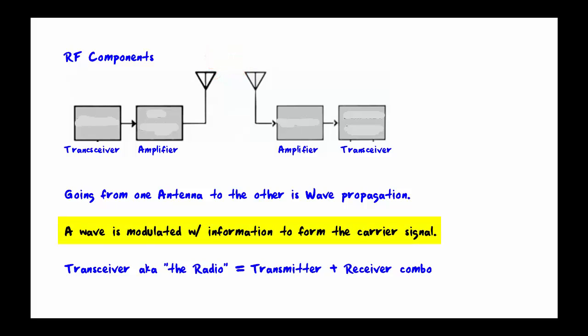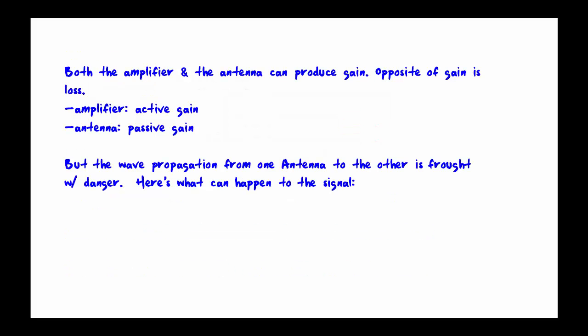A wave is modulated with information to form a carrier signal. In other words, they take a wave, they put information on top of that wave, and that becomes a carrier signal. A transceiver is made up of a transmitter and a receiver in one. That's also just called the radio a lot in Wi-Fi. The transceiver on the left-hand side produces a signal, and then that signal is modulated and then amplified, sent out across to the other antenna. It's received, amplified, and then demodulated on the other side.